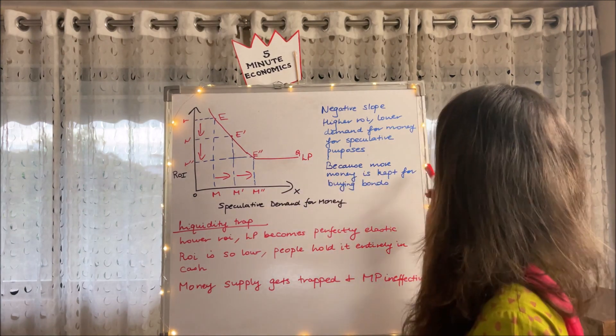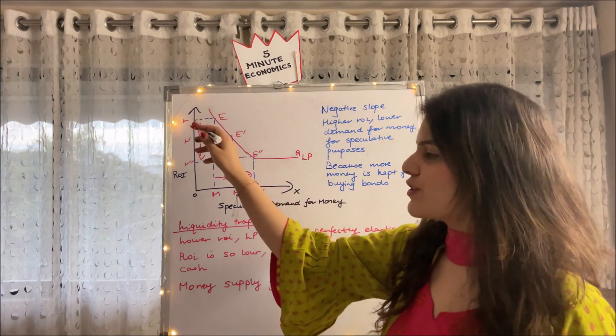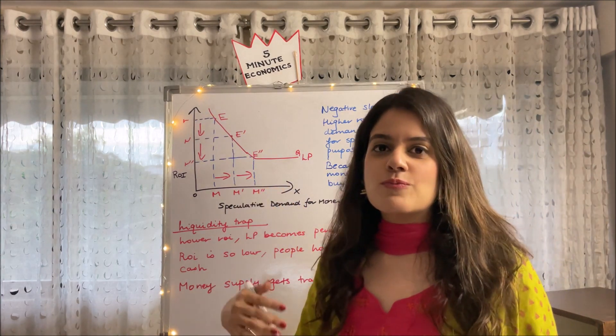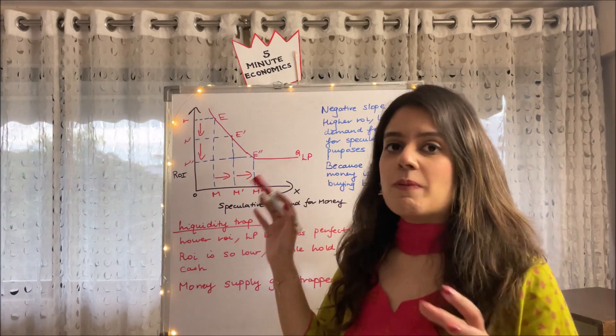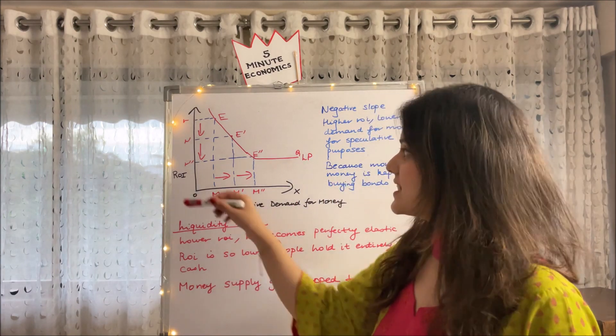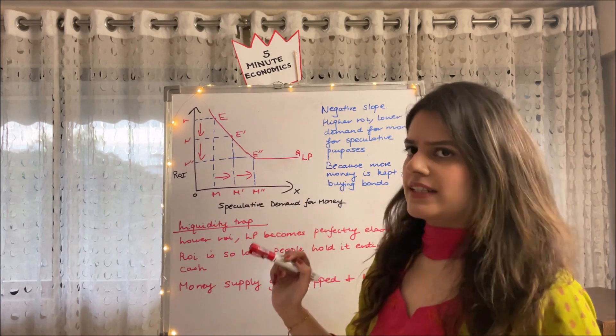Because more money is kept for buying bonds at a higher rate of interest, we will tend to invest more in bonds which will give us some return and less money will be kept for speculative demand for money. So this is the reason why our shape is negative and inclined.